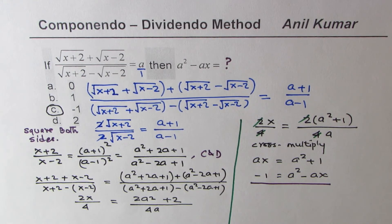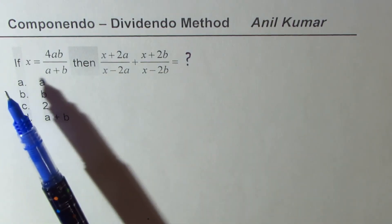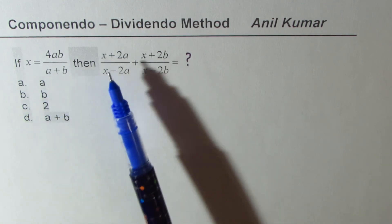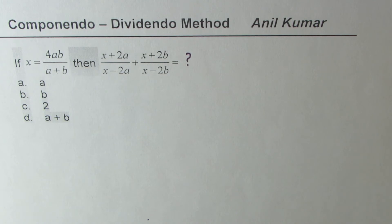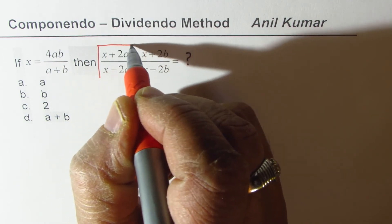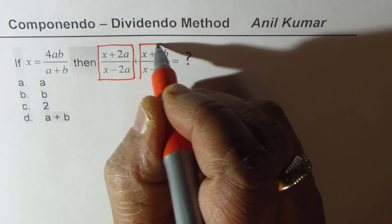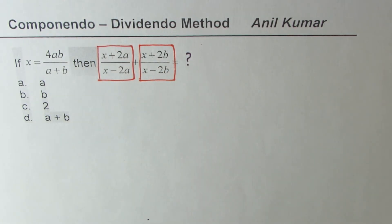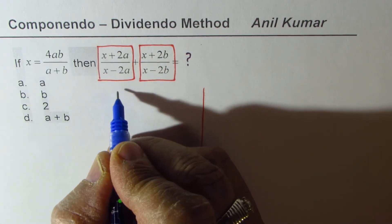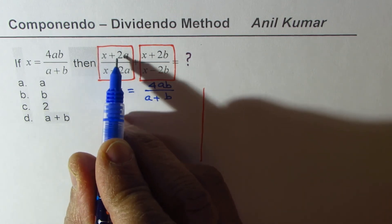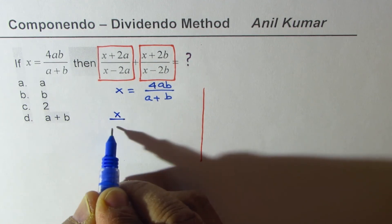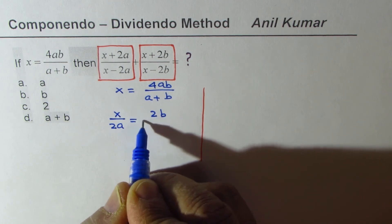In the third question, we are given x equals 4ab over (a plus b), and we need to find (x plus 2a) over (x minus 2a) plus (x plus 2b) over (x minus 2b). We are looking for two separate componendo-dividendo applications: one involving x and a, and one involving x and b. Starting from x equals 4ab over (a plus b), since we need 2a, I rewrite as x over 2a equals 2b over (a plus b).